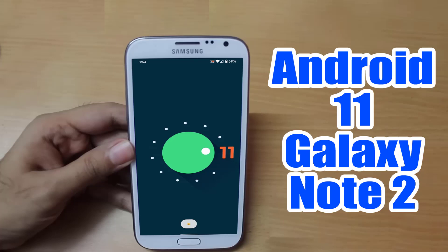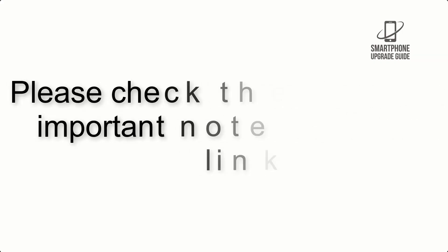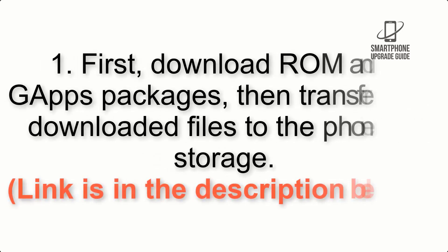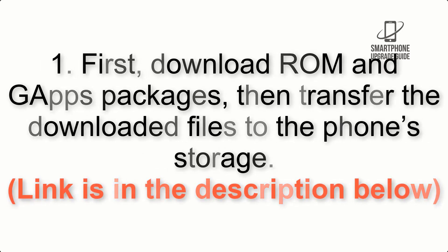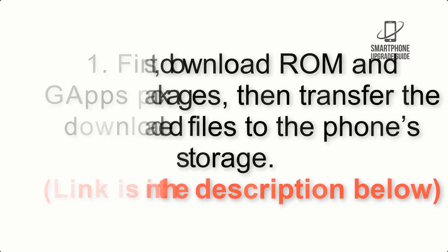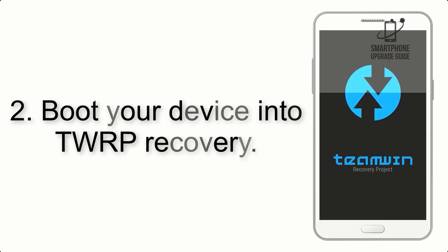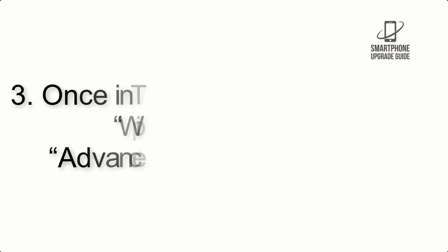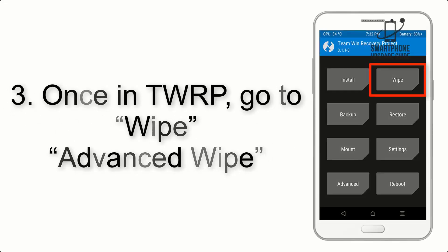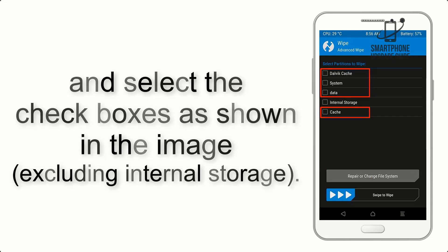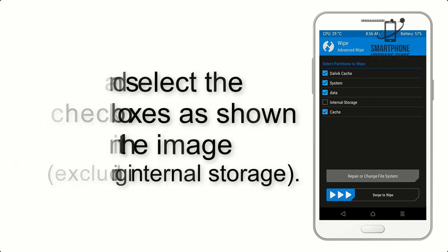Install Android 11 on Galaxy Note 2 via Lineage OS 18.1. Step 2: Boot your device into TWRP Recovery. Once in TWRP, click on Wipe, then Advanced Wipe, and select the checkboxes as shown in the image, excluding internal storage.